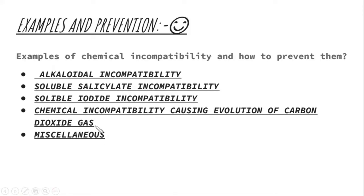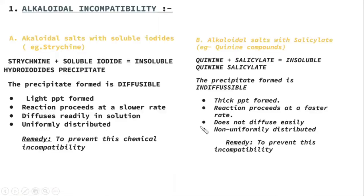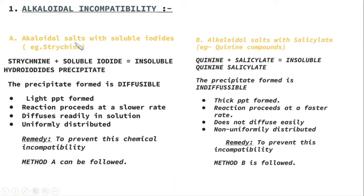We will now discuss examples of chemical incompatibilities. First, alkaloid incompatibility. Alkaloidal salts such as strychnine react with iodides, leading to the formation of an insoluble precipitate that is diffusible in nature.